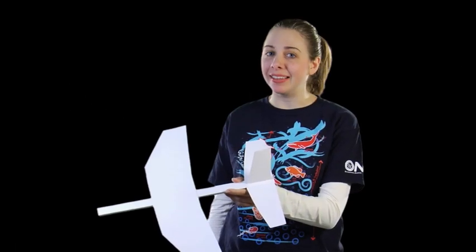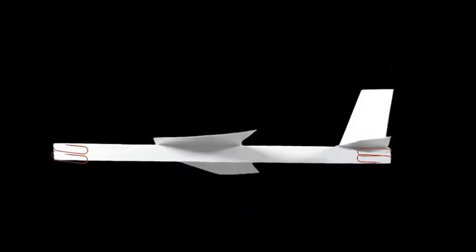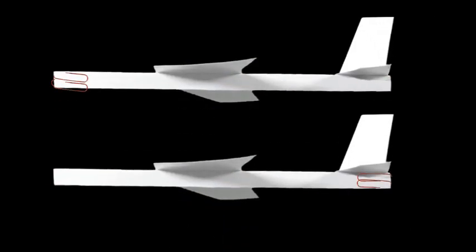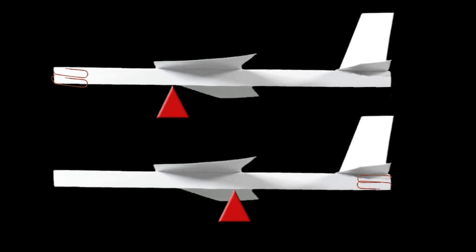Now knowing what you know about balance, how do you think the plane will fly if you put the center of gravity in the front of the wing? Or how do you think it will fly if you put the center of gravity behind the wing? Add paper clips to the front or back of the plane so that each plane has its own balance point. Make it so that one plane has a balance point in front of the wing and the other has a balance point in back of the wing.